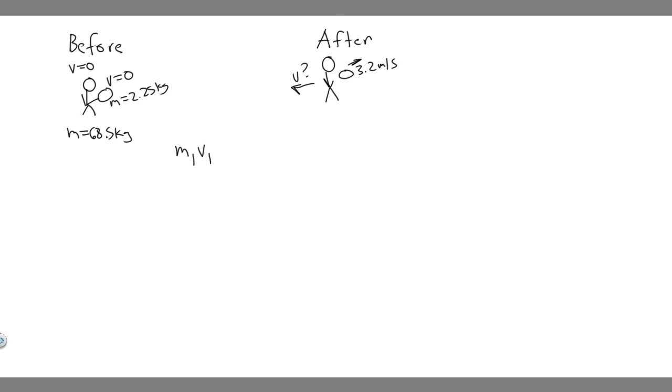M1V1 plus M2V2 is equal to M1V1 final plus M2V2 final. Because the momentum in the beginning has to be equal to the momentum at the end. That's something we know. So this is going to allow us to solve.